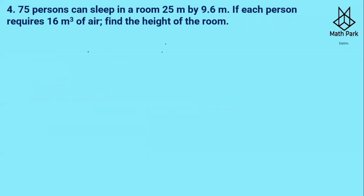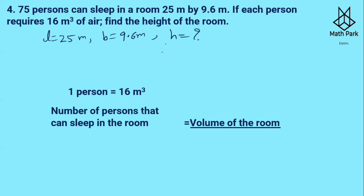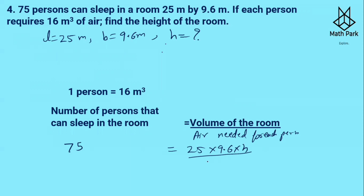Next question: 75 persons can sleep in a room which is 25 m × 9.6 m. The length is 25 m, breadth is 9.6 m, and height h is to be calculated. Each person requires 16 m³ of air. Number of persons = volume of room ÷ air needed per person, so 75 = (25 × 9.6 × h) ÷ 16.